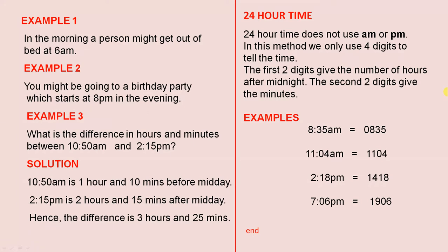Now, let's look at 24 hour time. 24 hour time does not use AM or PM. In this method, we only use four digits to tell the time. The first two digits give the number of hours after midnight. The second two digits give the minutes.